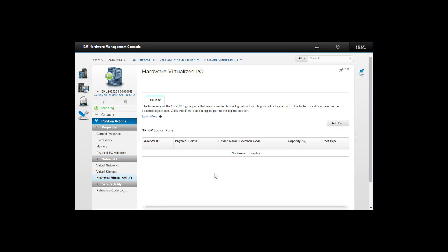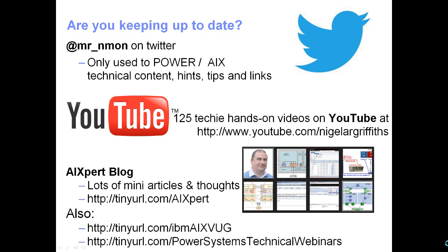That's a quick look around the properties of a virtual machine and how we could dynamically change them with a much nicer user interface. You can find me on Twitter, and lots of my other movies at YouTube.com Nigel A.R. Griffiths. I've got a blog — AI Expert Blog — and don't forget those two virtual user groups for AIX and Power Systems. Very useful places to go to get lots of information. If you like this movie, why not click on the like thumbs up button below.